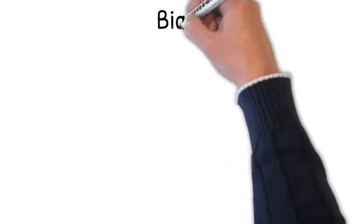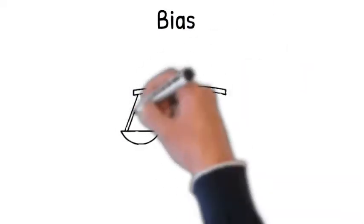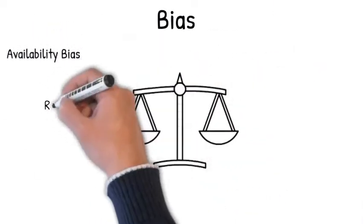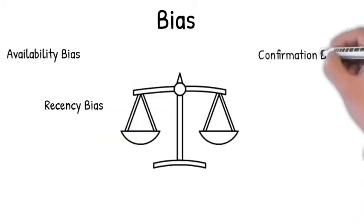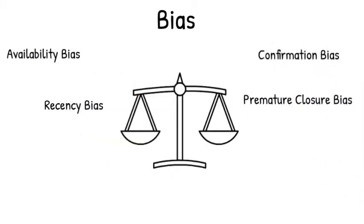Bias can be both positive and negative, but we need to be aware of them to balance and check our thinking. There are too many types of biases to describe them all here, but a few of the more common ones are availability bias, recency bias, confirmation bias, and premature closure.